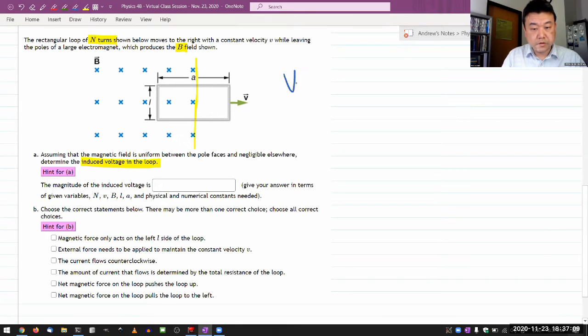Faraday's law says induced voltage, absolute value, is equal to absolute value of the rate of change of the magnetic flux. Here, the change of magnetic flux is not due to the change of magnetic field, but due to the area. So I think it's useful to write it out this way.